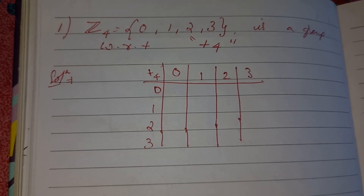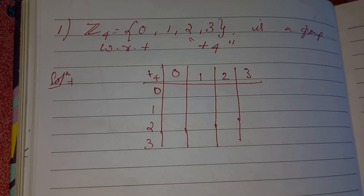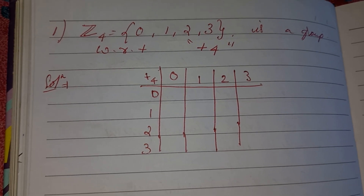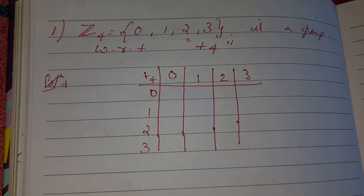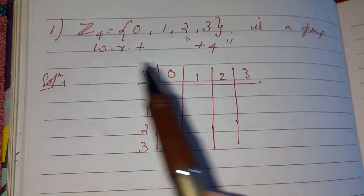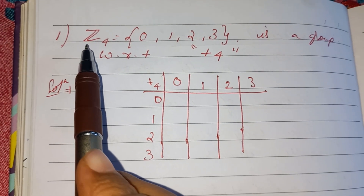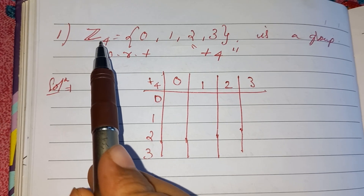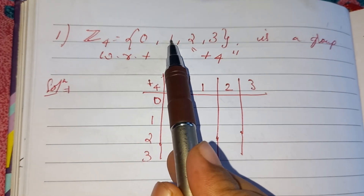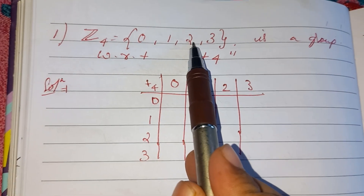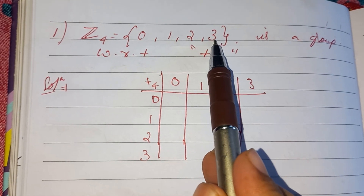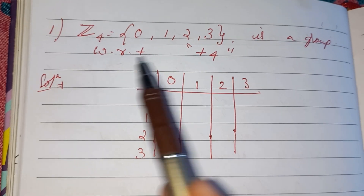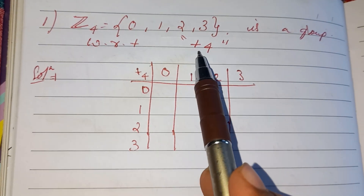Hello everyone, welcome to my channel. Today in this video we will be showing that the set Z4, which consists of elements 0, 1, 2, 3, is a group with respect to addition modulo 4.